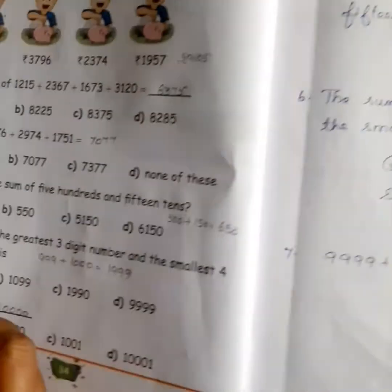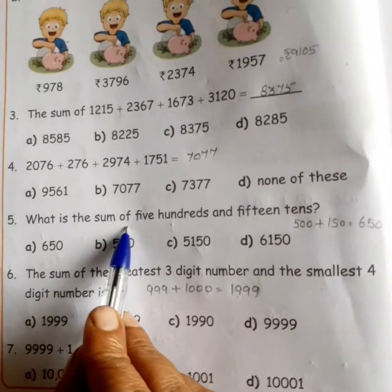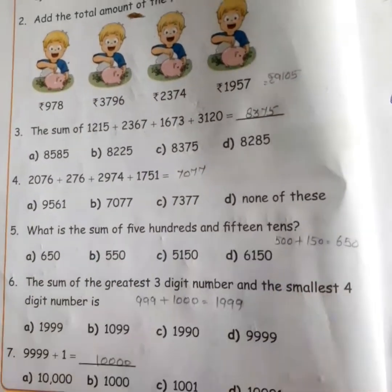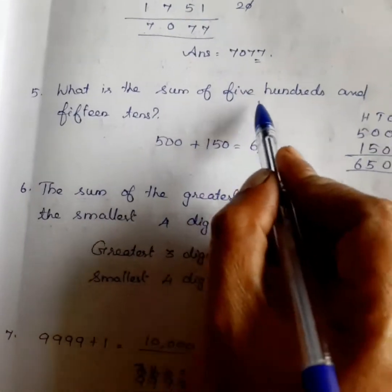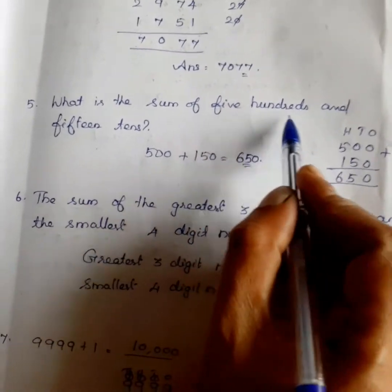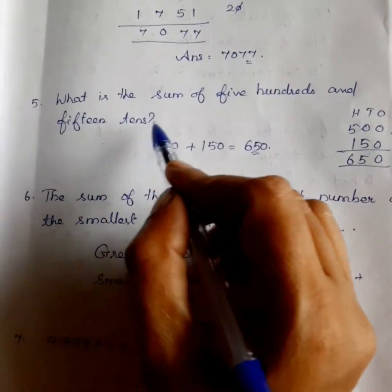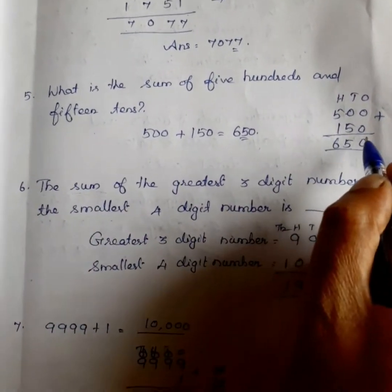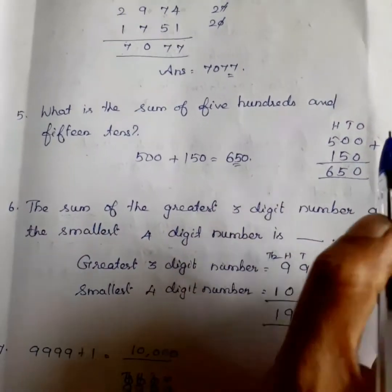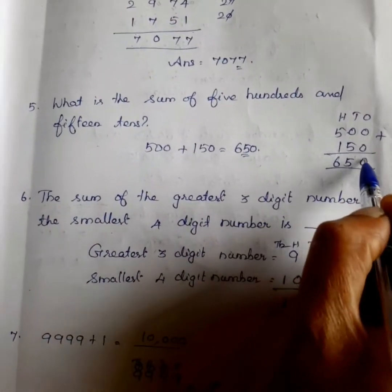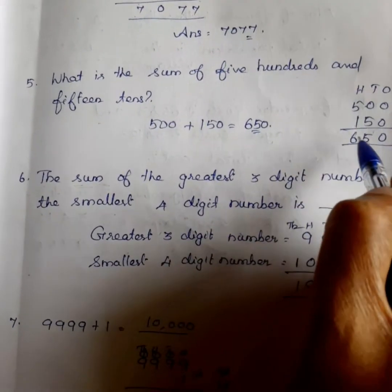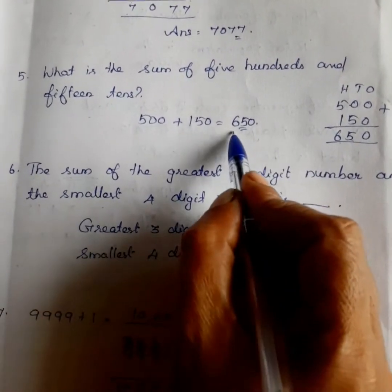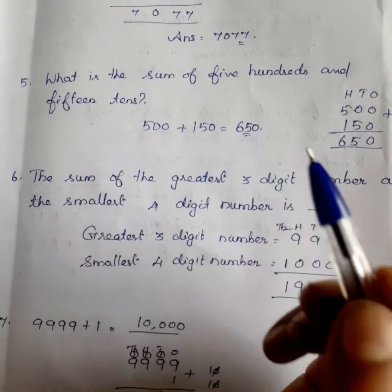Next sum: What is the sum of 500 and 15 tens? 15 tens means 150. Now add the two values. 0 plus 0 is equal to 0. 0 plus 5 is equal to 5. 5 plus 1 is equal to 6. So, answer: 650.